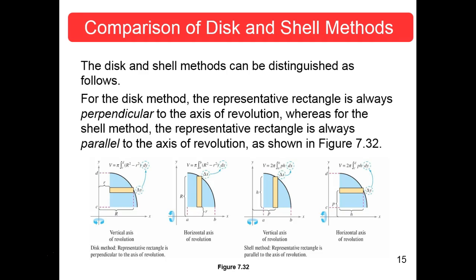In revolving around the y-axis, if this is your curve and this is your dy, the rectangle is perpendicular to the axis of revolution — this would be the washer method, a disk method with a hole in the center. The volume is the area of an outer circle minus the area of an inner circle: π R² minus π r², where R is the function value as a function of y. You have to express this function as a function of y to do the disk or washer method.